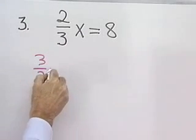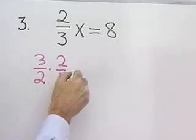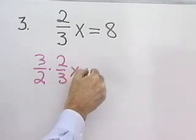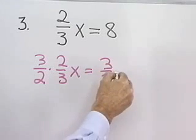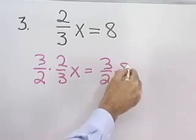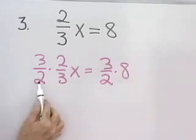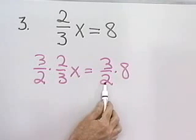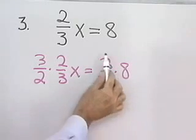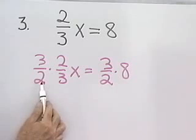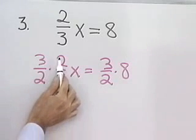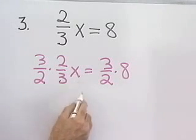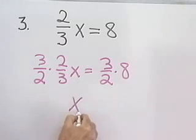3 halves times 2 thirds x is equal to 3 halves times 8. If I multiply the left side by 3 halves, I have to multiply the right side by 3 halves also — that is the multiplication property of equality. 3 halves times 2 thirds is 1, times x is just x.